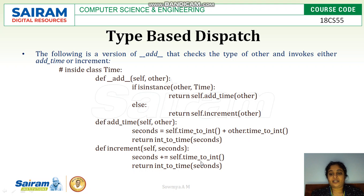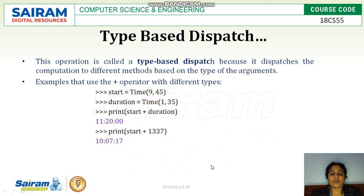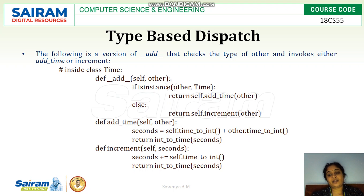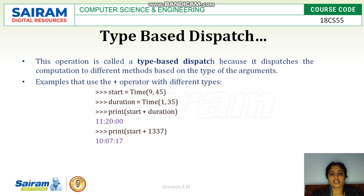In the increment method, the second is incremented with the self object and it returns the self object. This operator is called type-based dispatch because it dispatches the computation to different methods based on the type of argument you are passing. The add method is dispatching or calling some other methods for its execution based on the type of argument.